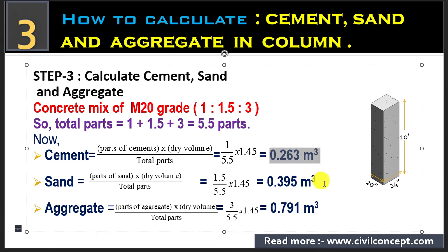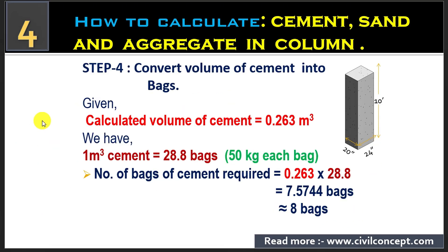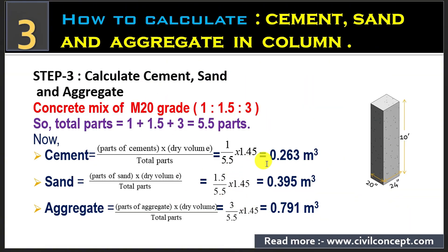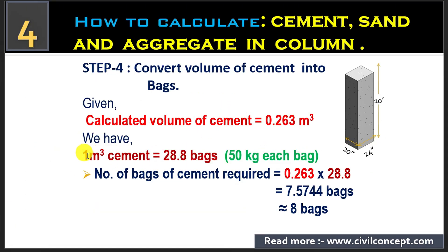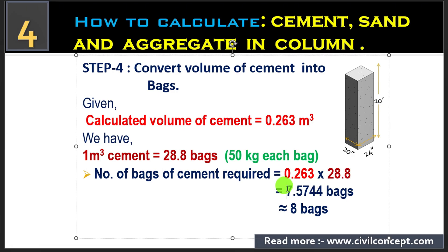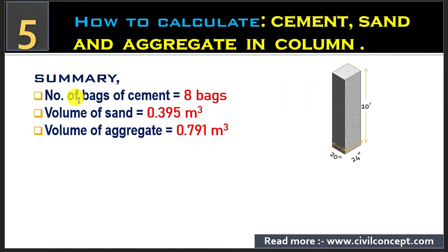We have calculated the volume of cement, sand, and aggregate separately. Now we convert the volume of cement into bags, because cement always comes in bags. The calculated volume of cement is 0.263 meter cube. One meter cube of cement contains 28.8 bags of cement. So the number of bags required is 0.263 multiplied by 28.8, which gives 7.5744 bags — approximately 8 bags of cement.